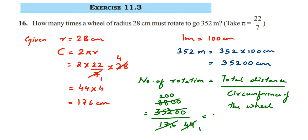So the wheel has to rotate a total of 200 times to cover 352 meters. I hope this question is clear. If you have any questions or doubts, you can drop a comment below. Thank you so much for watching.